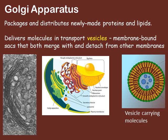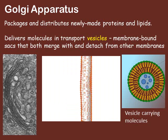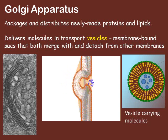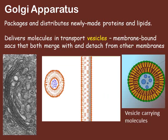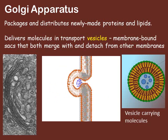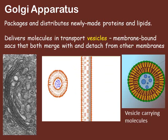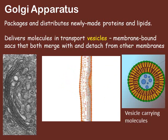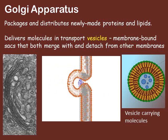How molecules get to where they're going is the job of transport vesicles, the final organelle to consider as part of the endomembrane system. These are membrane-bound sacs — again, just a phospholipid bilayer. Inside the vesicle will be whatever molecule, enzyme, or lipid is being carried. Because the vesicle is composed of a phospholipid bilayer, it can merge very easily with other structures also composed of a phospholipid bilayer. It's better to think of these as very plastic, easily able to merge and detach at will with other structures.